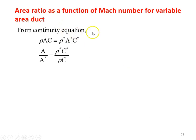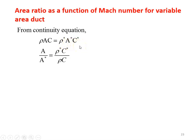From the continuity equation, ρAC is constant. We write ρAC equal to ρ*, A*, and C*. So ρ*, A*, and C* are for the critical condition where Mach number equals 1. We rearrange to get A/A* equal to (ρ*/ρ) × (C*/C).